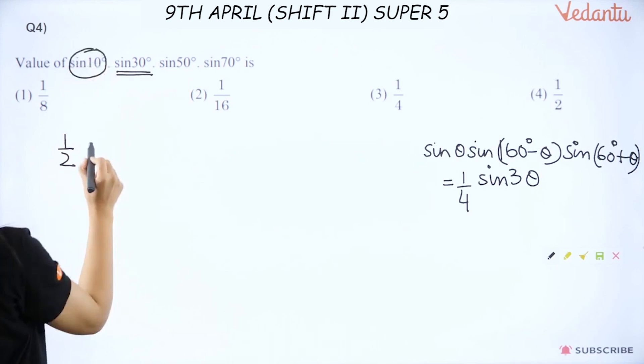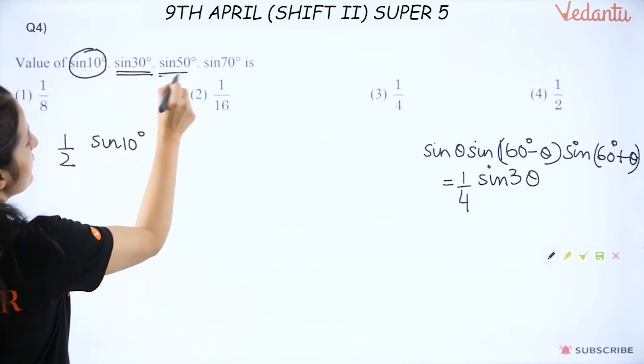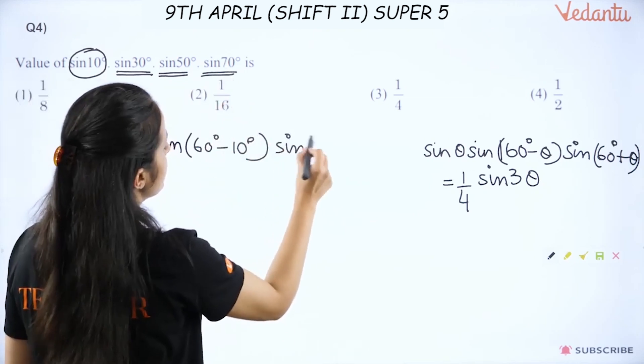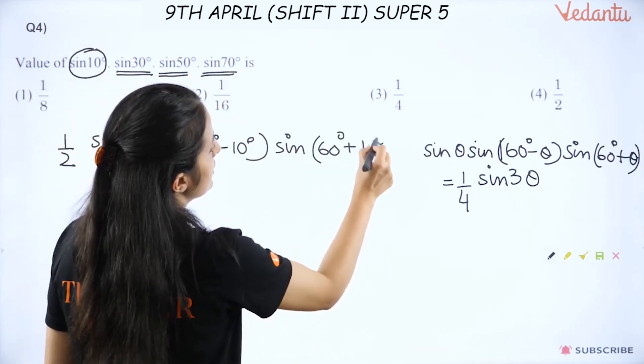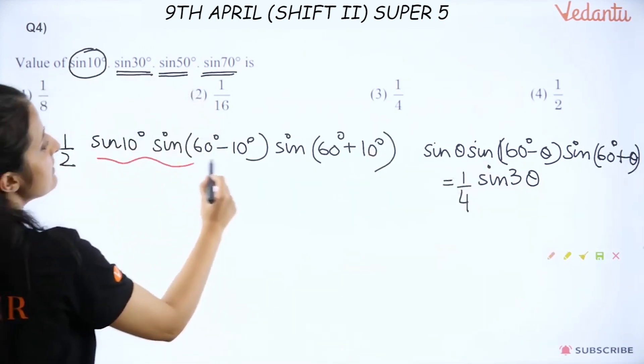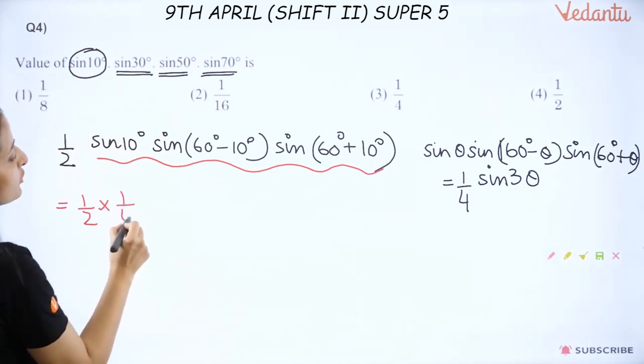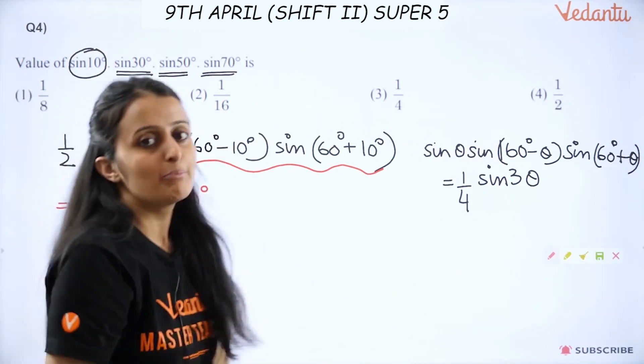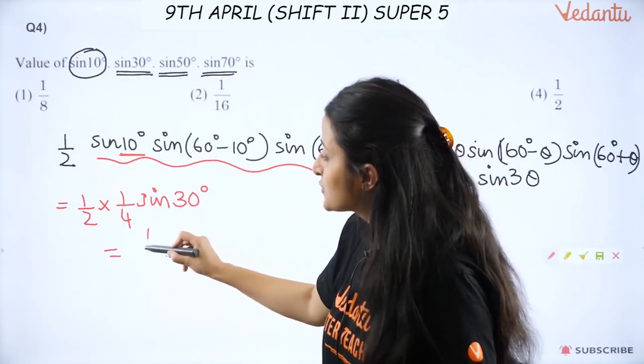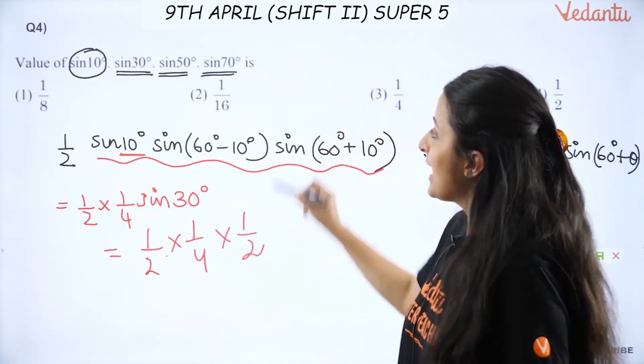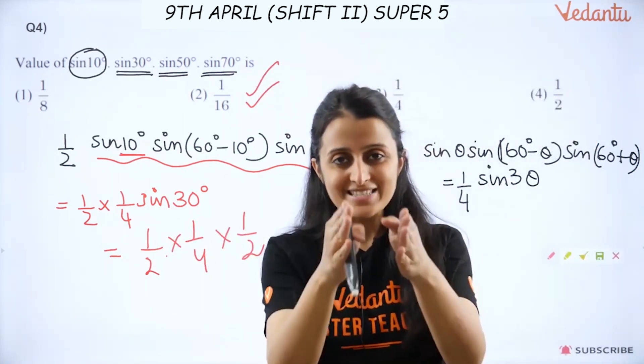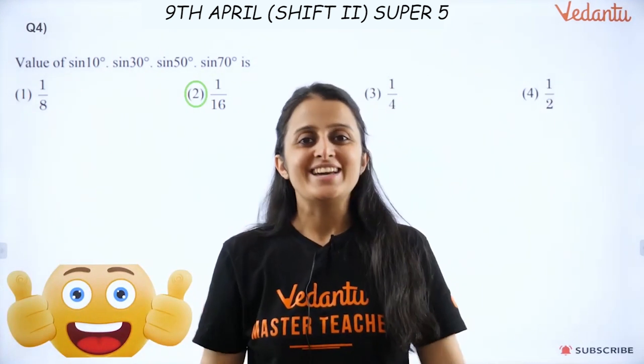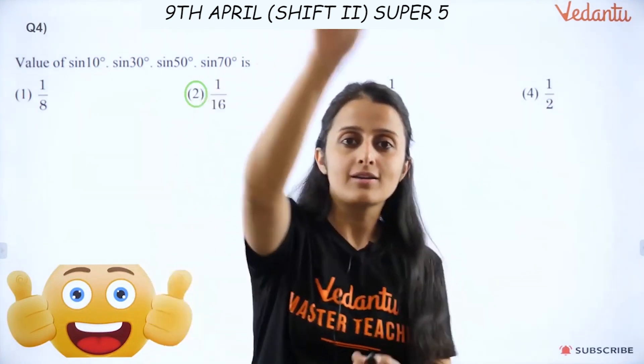Yes, how? Look. Sin 30 you already know is half. Now if you look at the values here, I have sin 10°, here is 50° which I can write as 60° - 10°, and here I have 70° which I can write as 60° + 10°. So if you actually watch out, it is absolutely resembling the formula. So this becomes 1/4 of sin(3θ). Theta is 10, so sin 30°. Now tell me what is the answer? Sin 30 is obviously half, so 1/2 × 1/4 × 1/2. And absolutely right, 1/16 is your answer. So kudos to you guys.